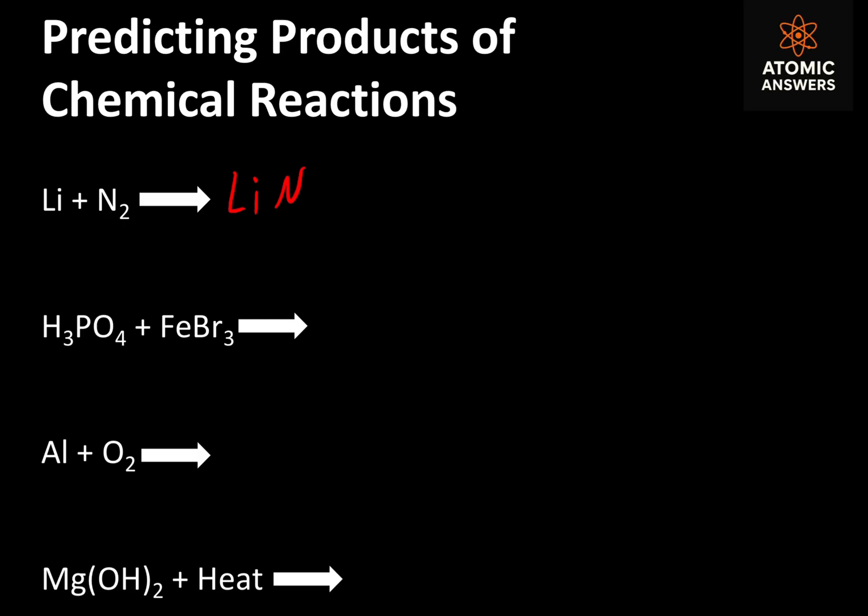So the only thing that we can do is check for subscripts using the cross-charge rule. Lithium is in group one on the periodic table, giving it a plus one charge. Nitrogen is in group five on the periodic table, giving it a minus three charge. These numbers are not equal but opposite, so we're going to cross them over. So the charge of the nitrogen is the subscript on the lithium, and the charge of the lithium is the subscript on the nitrogen. So essentially you're going to be producing Li3N. Now of course this equation isn't balanced, but we'll be having a video on that shortly.